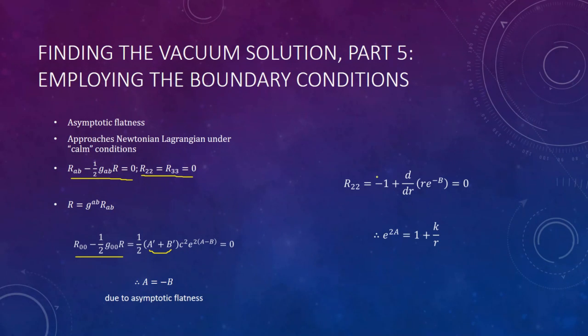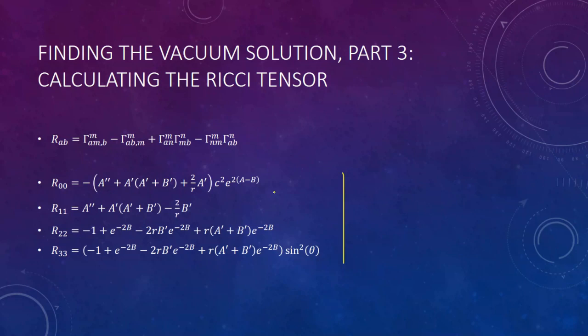We can then plug the solution into the theta angle component of the Ricci tensor. Looking back here, we find that if the theta angle component equals zero, so does the phi angle component, as they are the same except phi multiplies it by sine squared phi.